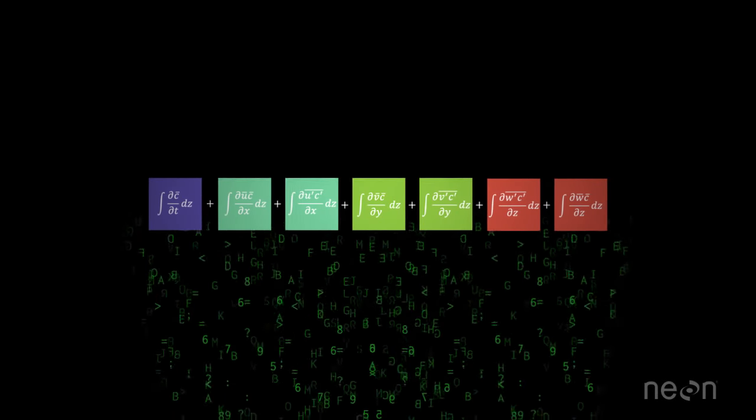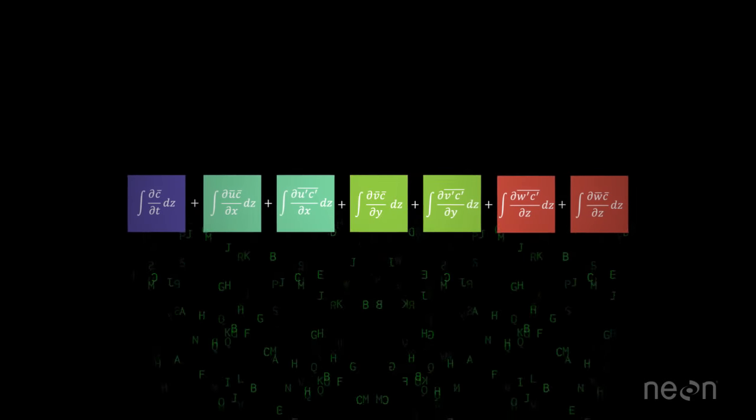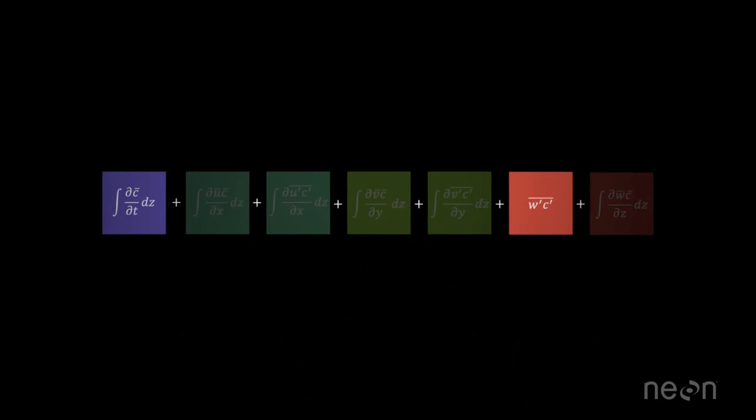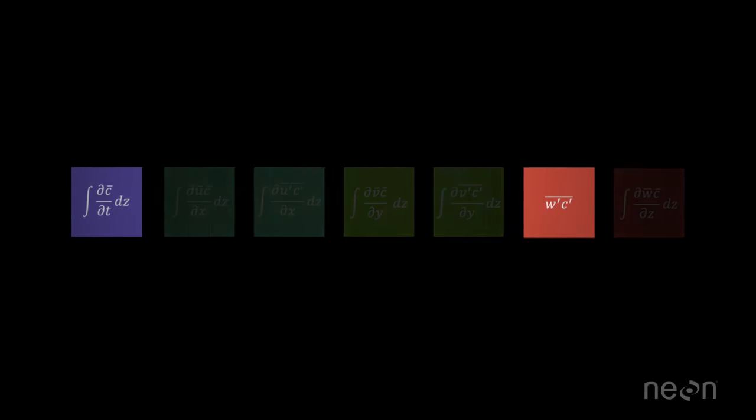The wind and gas concentration data go into a complex series of equations that, after several assumptions, yield estimates of the movement of gas into or out of an ecosystem.